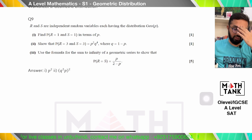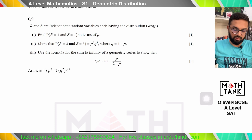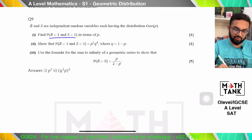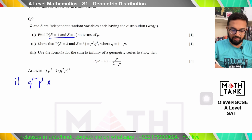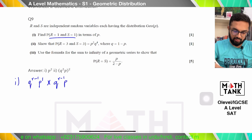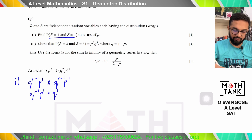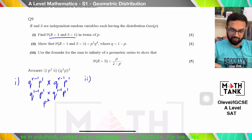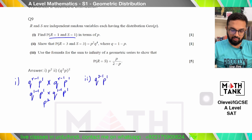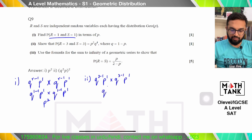Question 9. The random variables R and S are independent, each having a geometric distribution. Find P(R=1 and S=1): that is q^(1−1) × p × q^(1−1) × p = p². For P(R=3 and S=3): q^(3−1) × p × q^(3−1) × p = q⁴ × p².